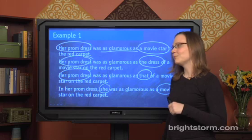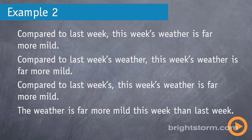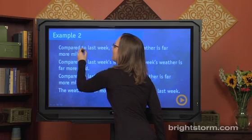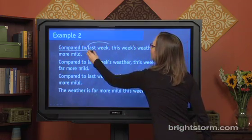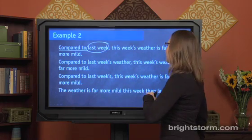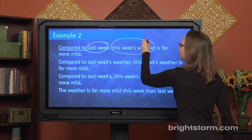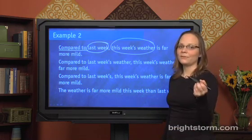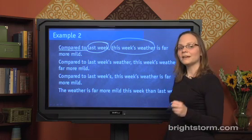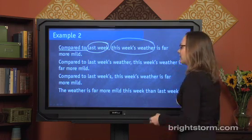Here's another example. The flawed sentence is: 'Compared to last week, this week's weather is far more mild.' We know it's a comparison because of 'compared to.' On one hand we have 'last week' — a period of time — and on the other hand 'this week's weather' — a kind of weather. That's not apples to apples.